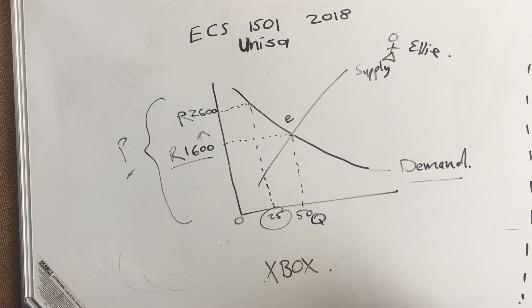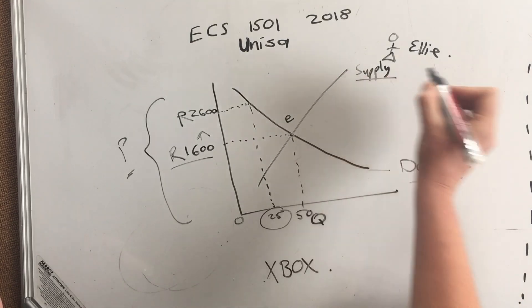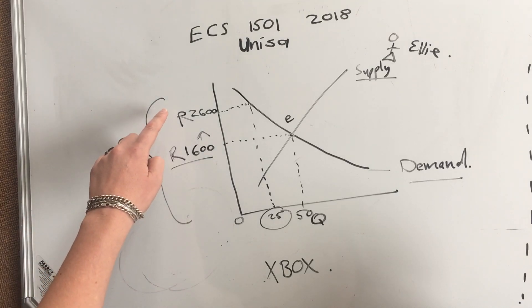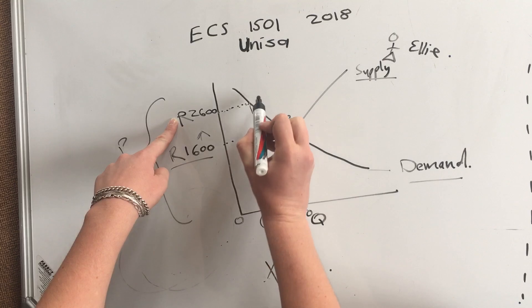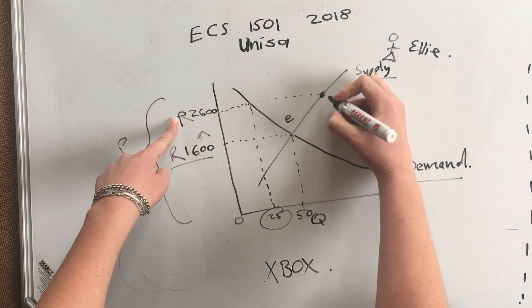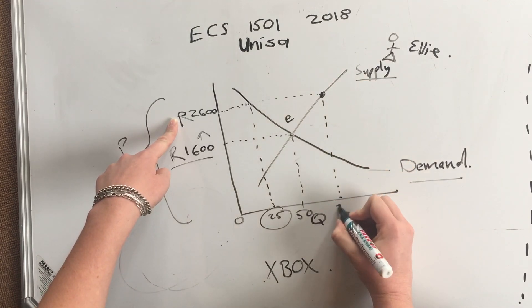Now I can do exactly the same all the way through to my supply line over here. If I'm saying we're selling it for 2600 rand, the supply of Xboxes will run all the way through to my supply curve and meet over there. Then I take it all the way down to see over here—75.